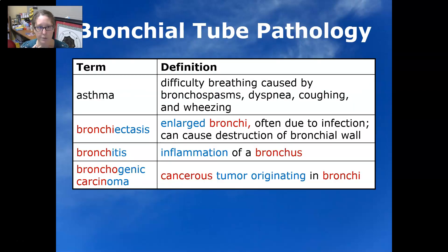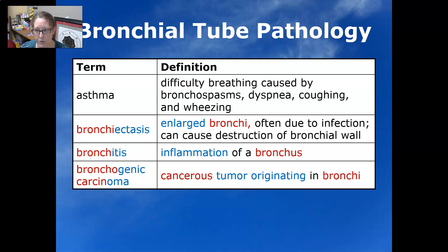Now we're going to go down to the bronchial tubes. Asthma is a difficulty breathing caused by bronchospasms, dyspnea, coughing, and wheezing. Bronchiectasis is an enlargement of the bronchi often due to infection that can cause destruction of the bronchial wall. Bronchitis is an inflammation of a bronchus. Bronchogenic carcinoma is a cancerous tumor originating in the bronchi.